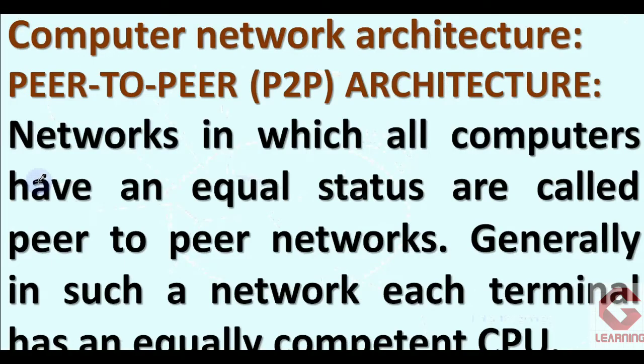Next is computer network architecture. Whenever we establish computer networks, two different architectures are available: one is peer-to-peer and the second one is client-server. As per the requirement we have to select one. The first one is peer-to-peer architecture. Networks in which all computers have an equal status are called peer-to-peer networks. Generally in such a network, each terminal has an equally competent CPU. In peer-to-peer architecture, all computers have equal status, meaning their processing speed is the same.